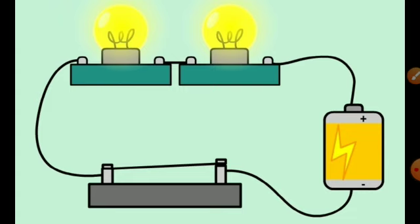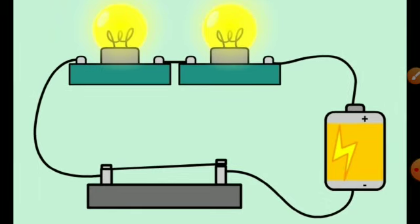To explain how continuous flow is maintained, consider the analogy of water flow. In a tank, water continuously flows as long as the levels are different. To maintain that flow, we use a water tap that supplies water to the high-level tank, maintaining the flow. Similarly, we use a battery in an electric circuit.